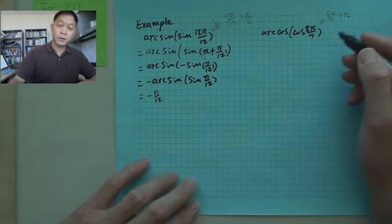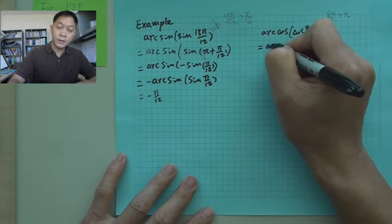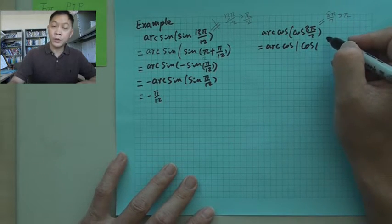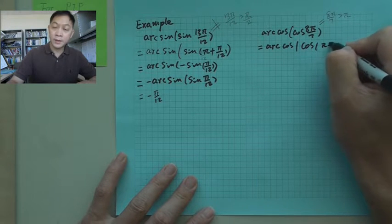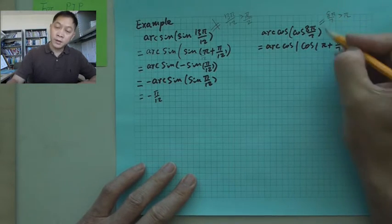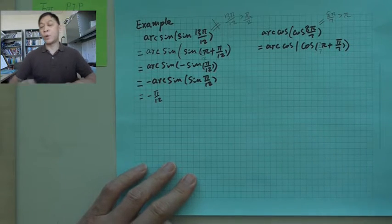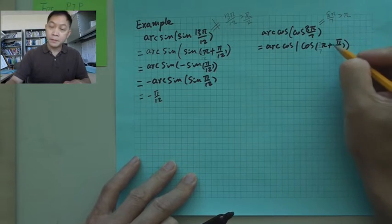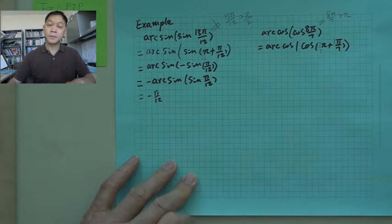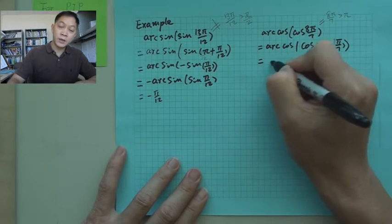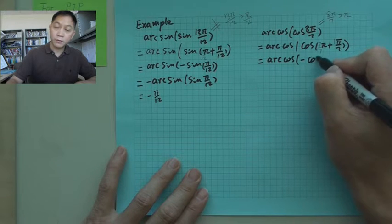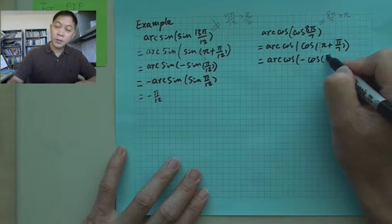Now, how to do that? Again, you want to split 8 pi over 7 to pi plus pi over 7. The reason is 7 over 7 is 1, 7 plus 1 is 8, so numerator is 8, denominator is 7. Now using the formula we reviewed, this will be negative cosine pi over 7.